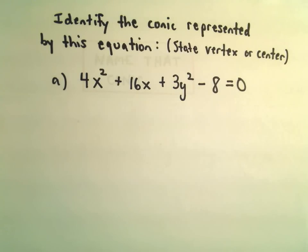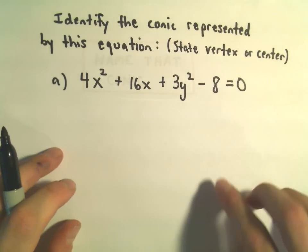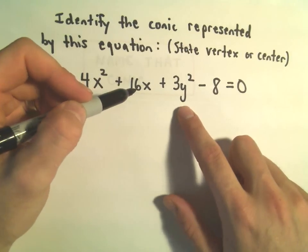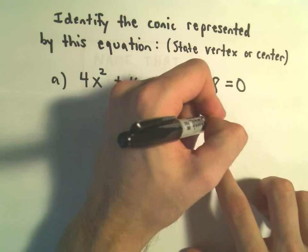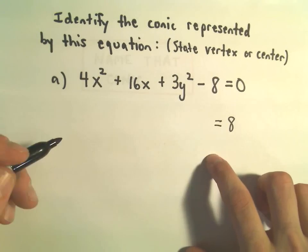On all of these, pretty much, I just do completing the square. So we've got 4x squared plus 16x plus 3y squared minus 8. The first thing I'm going to do is add 8 to both sides.